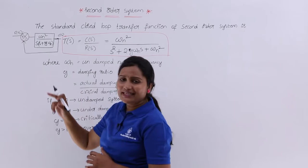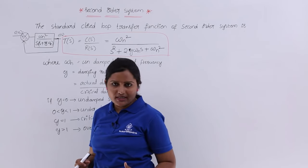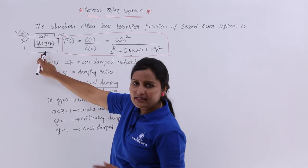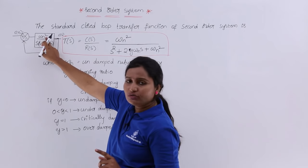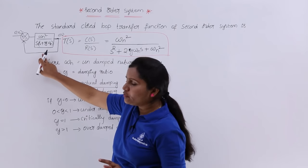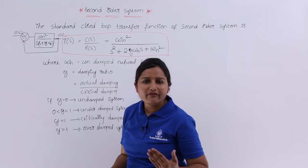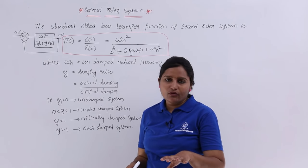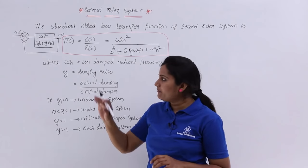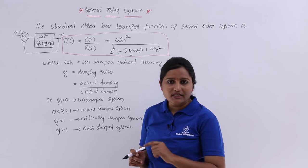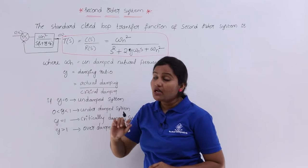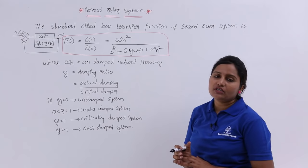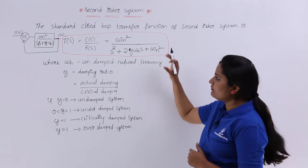If you apply the closed loop formula G by 1 plus GH, where feedback gain H is equal to 1 and G is the open loop gain, then applying G by 1 plus GH with H equal to 1, you are going to get the same standard transfer function. So the basic transfer function of a second order system is as stated.